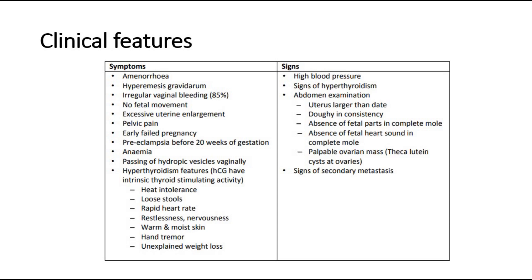Other symptoms include hand tremor and excessive weight loss. For the signs, we can look for signs of hyperthyroidism, hypertension, and on abdominal examination the uterus is larger than dates, doughy in consistency, and we cannot feel any fetal parts in complete mole, absence of fetal heart sound in complete mole, and there might be a palpable ovarian mass which we call theca-lutein cysts. Also look out for signs of secondary metastasis.